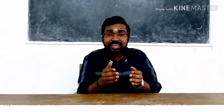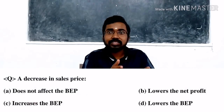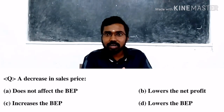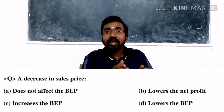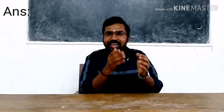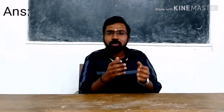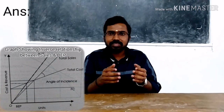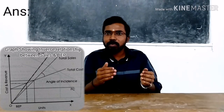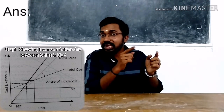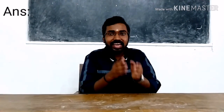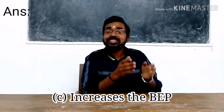Moving to the second question: a decrease in sales price — option one: does not affect the BEP; option two: lowers net profit; option three: increases BEP; option four: lowers the BEP. There is an inverse relationship between sales price and BEP. That means when sales price increases, BEP should decrease; when sales price decreases, BEP should increase. So the answer is option C — increases BEP.